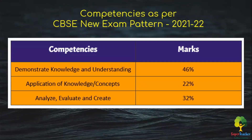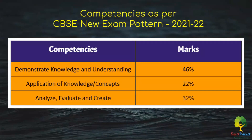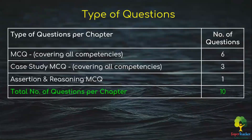Each question will be for one mark. The questions from each chapter will be based on CBSE competencies: Demonstrate Knowledge and Understanding will make up 46% of the 10 questions per chapter; 22% will be application-oriented questions; and 32% will cater to Analyze, Evaluate, and Create competencies.